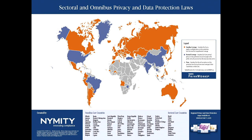Now, why should you care? This map shows the proliferation of privacy and data protection laws around the world. Every color-coded country has a privacy law on the books. Blue countries take a sectoral approach, focusing on industries or types of data — here in the United States we're hyper-focused on payment card data, social security numbers, healthcare data, and financial data. Red countries are omnibus jurisdictions that protect personal data generally, regardless of the business or how data is collected, treating privacy as a fundamental human right.